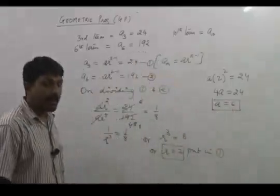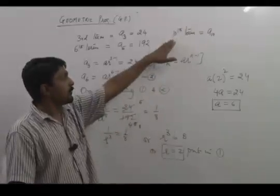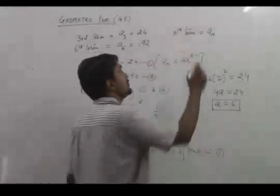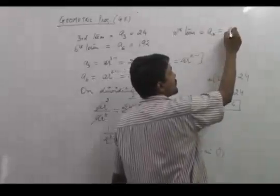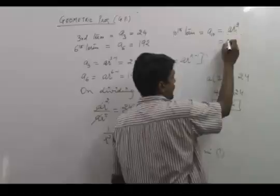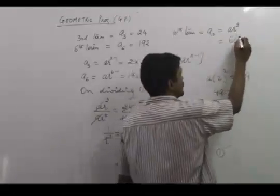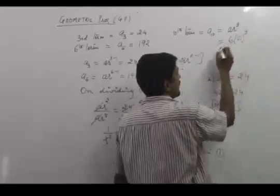Now if we have the first term and common ratio, we can find any term. Since we need to find the 10th term, we use the formula a10 equals a times r to the 9th. Now we put the values: a as 6 and r as 2 raised to the power 9.